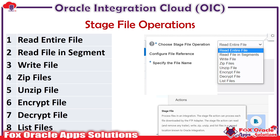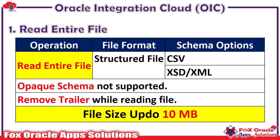For the read entire file operation, you must provide the file structure — it is mandatory. The supported structures are CSV, XSD, or XML. Opaque schema is not allowed for read entire file. You can also use the remove trailer option to remove the first line, such as a file header. The most important limitation is that you can read a maximum file size of 10 MB only with this operation.